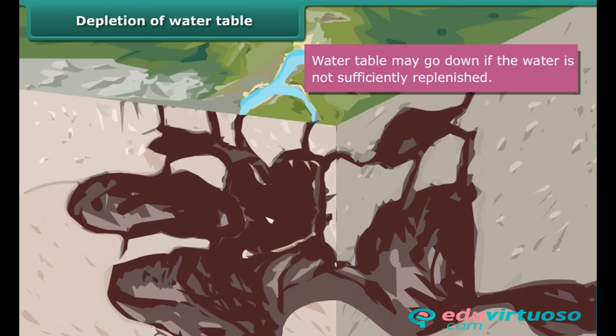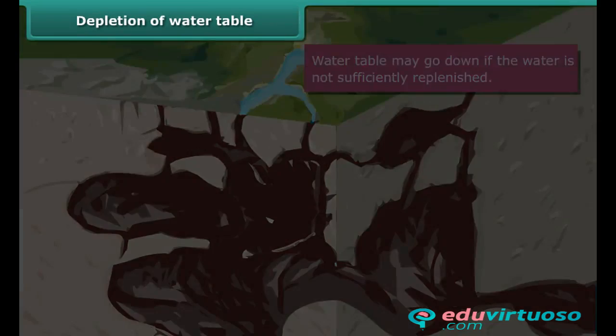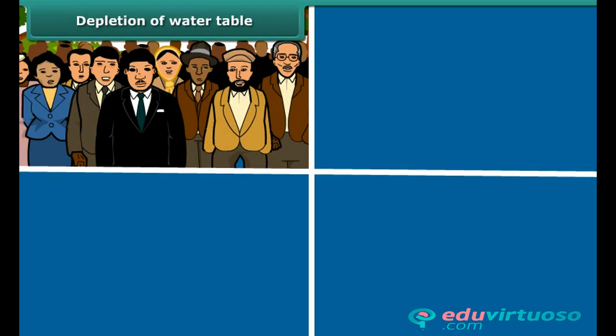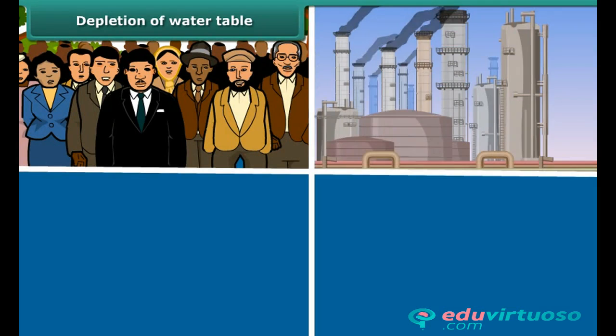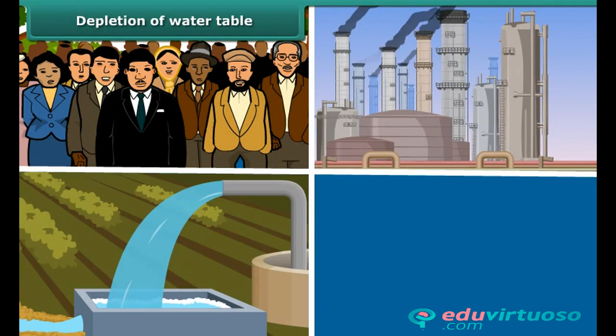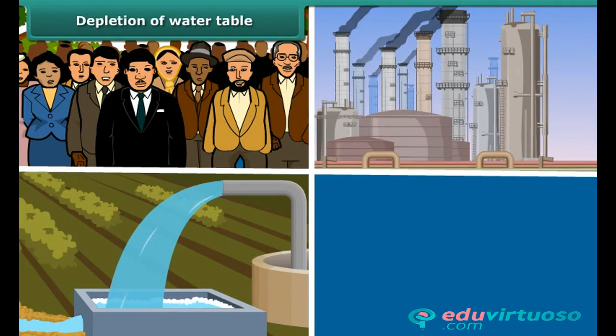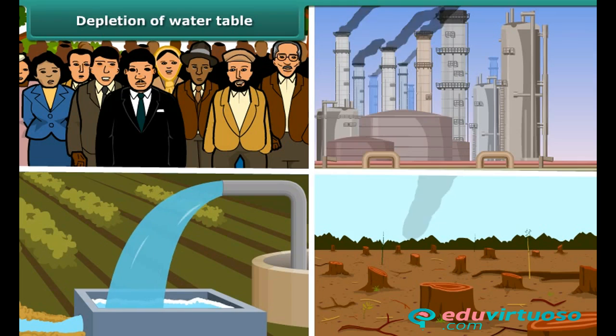However, the water table may go down if water is not sufficiently replenished. This may happen due to many factors such as increasing population, rapid growth of industries, agricultural activities, scanty rainfall, and deforestation.